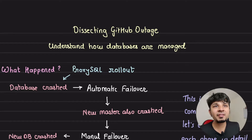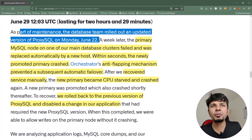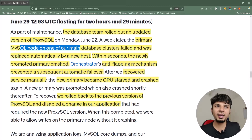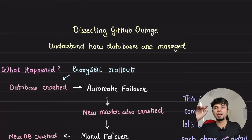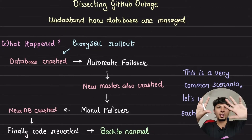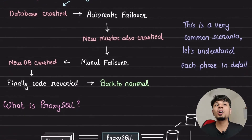So like always, we start with the incident report. As part of database maintenance, the team rolled out an updated version of ProxySQL on Monday June 22nd. The incident happened on the 29th — a week later — when the primary MySQL node on one of the main database clusters failed and was replaced automatically by a new host. Let's understand the first new term we encountered: ProxySQL.